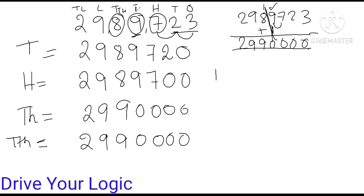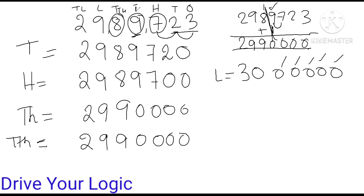Now if I say round off to lakh — see, there is a 9 here. When you add 1 to 9 it becomes 10 — write 0, carry 1. So 2 plus 1 becomes 3. Your answer will be 3,000,000 — three followed by all zeros. This is the lakh place: ones, tens, hundreds, thousands, ten-thousands, lakh — 3 here, and the rest all become zero.